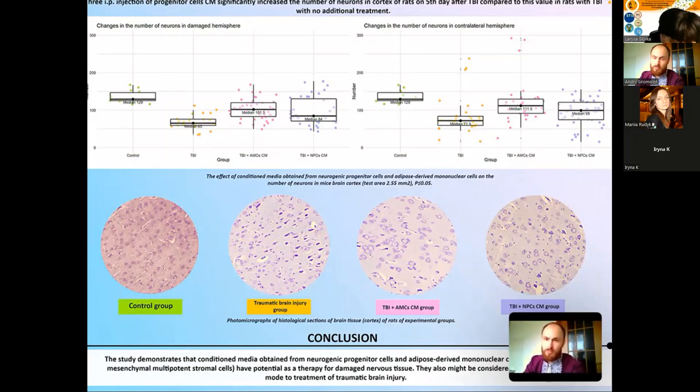If we compare the action of conditioned media, the adipose-derived mononuclear cells cultured conditioned media had slightly higher potential. All in all, we can say that conditioned media obtained from neurogenic progenitor cells and adipose-derived cells have potential as a therapy for damaged nervous tissue.